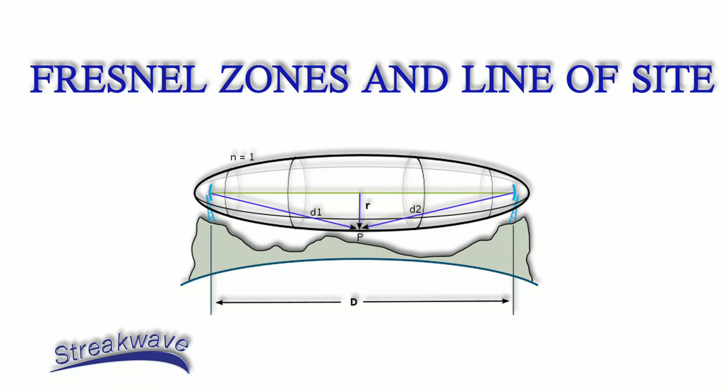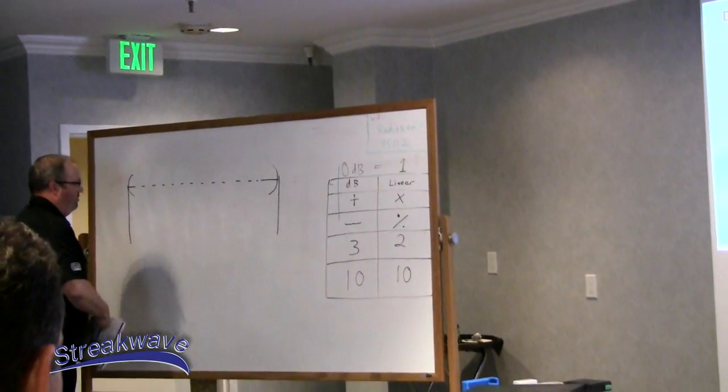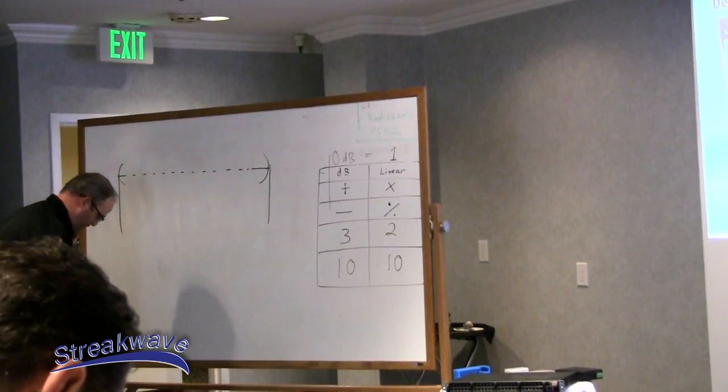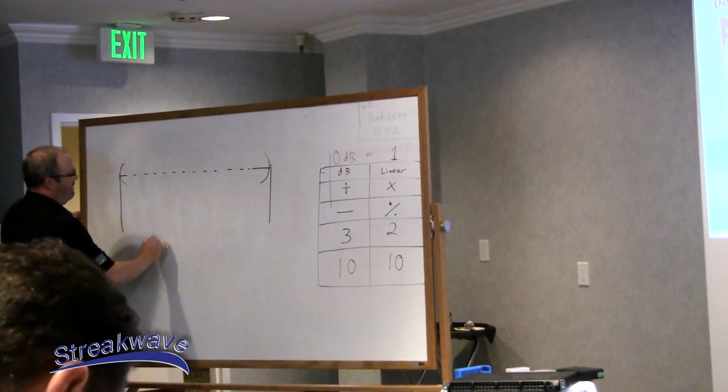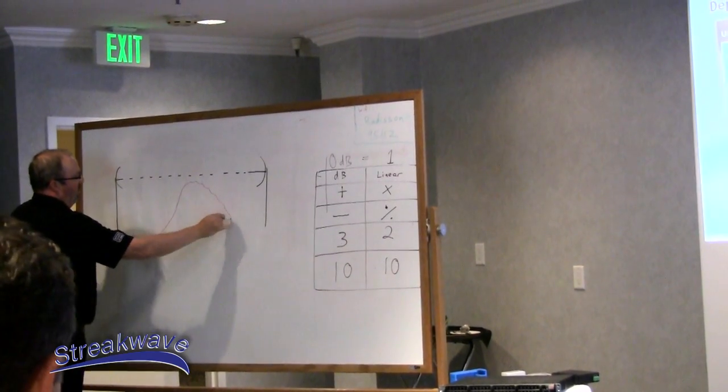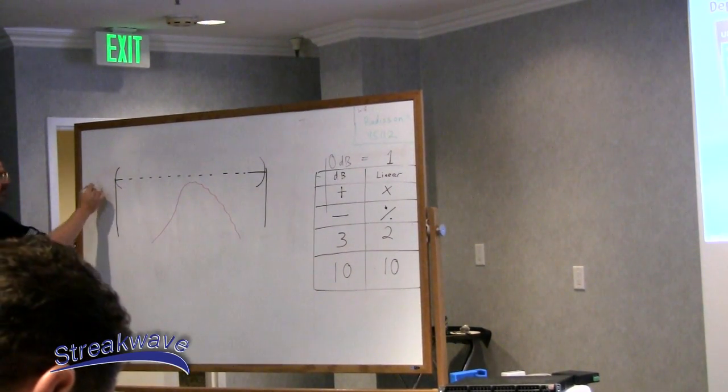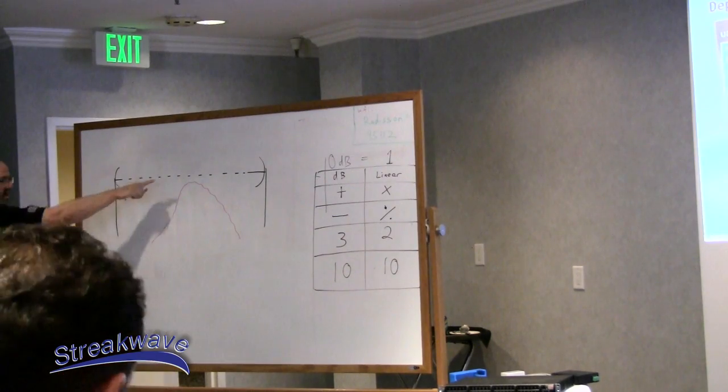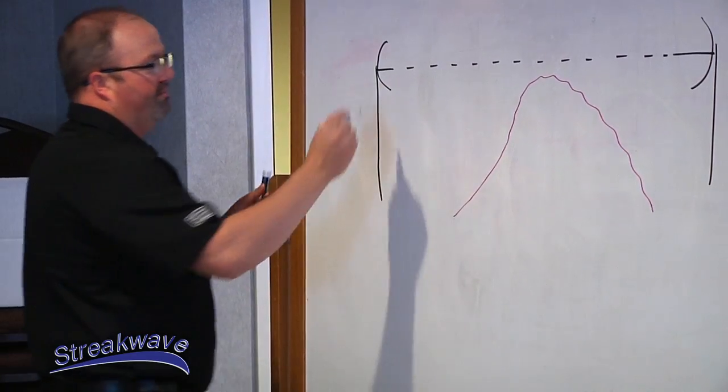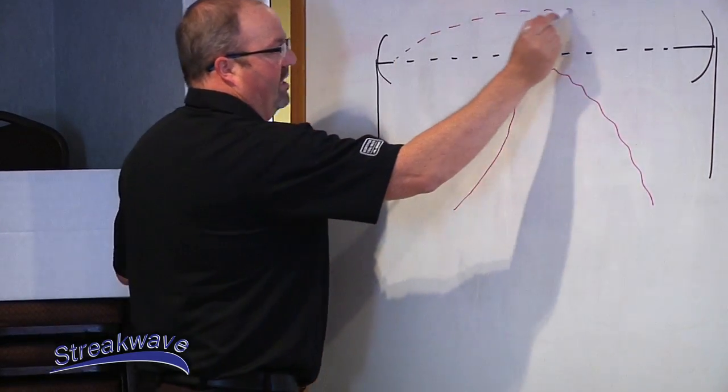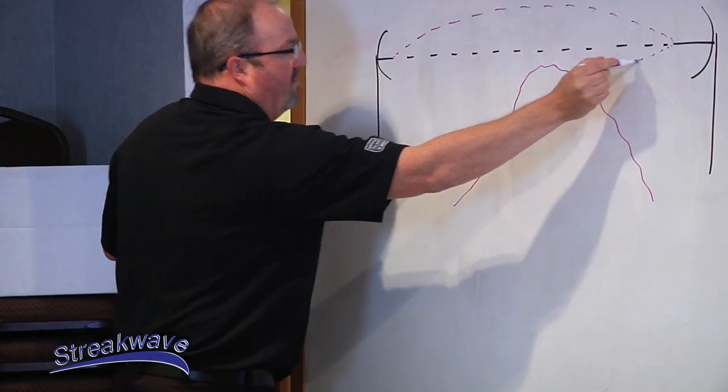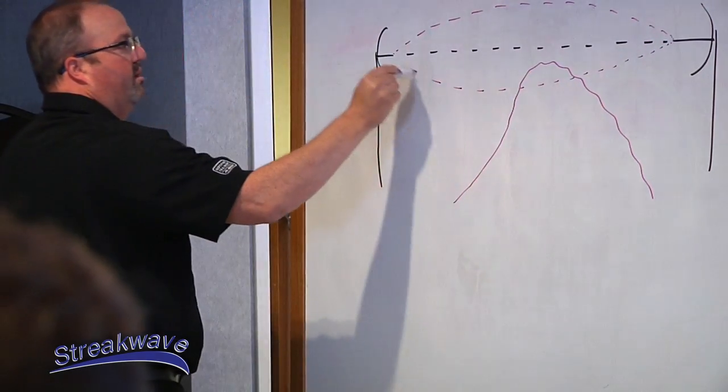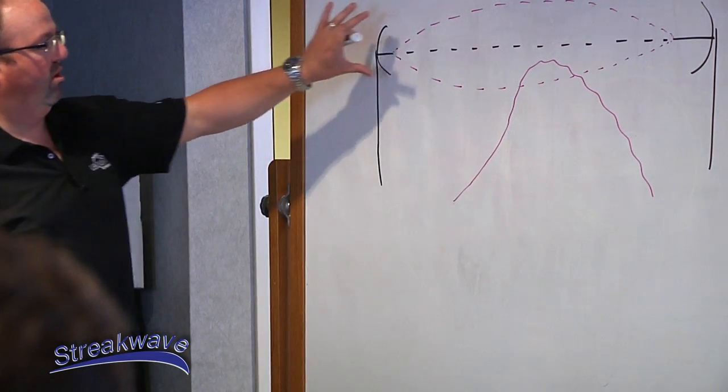So if we have an obstruction, if we have a mountain, okay. Now when I'm standing up here, I can see the other side. So I'm thinking, well I have clear line of sight. But the Fresnel Zone to this link and the way that the path actually comes across is here. It's more like an elliptical path.